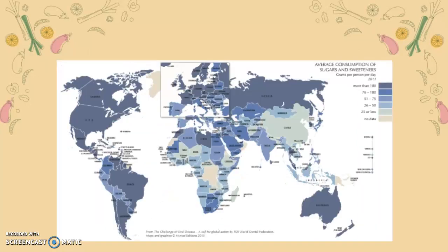For average consumption of sugars and sweeteners, the highest — more than 100 grams per person per day — is seen in Australia, most of North America, and much of South America. The rest of the world is quite uneven in consumption, with low, moderate, and some high areas like Libya for example.